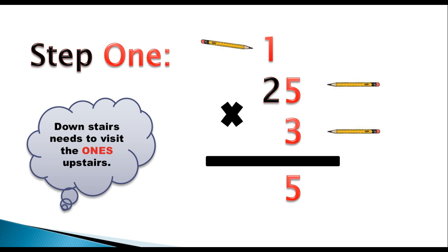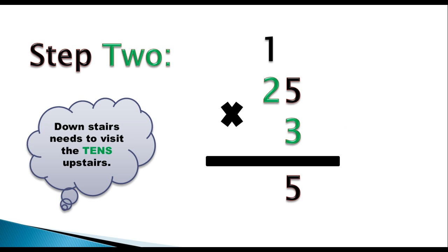Now moving on to step number 2. In step number 2, in green, the downstairs number, which is the 3, needs to visit the 10's place, which is also in green, and in this case, he's a 2. So 3 times 2, this 3 times this 2, gives you a product of 6.